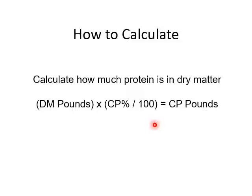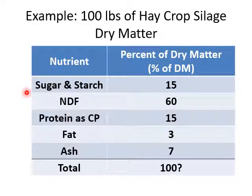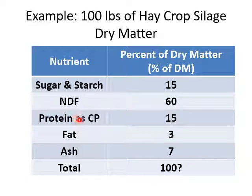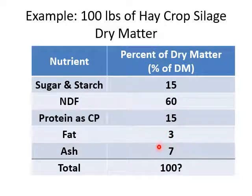Here we have an example of taking 100 pounds of hay crop silage dry matter and splitting it into: sugar and starch, NDF — these two are carbohydrates, the more available carbohydrate versus the cell wall — then crude protein (CP), fat, and ash to represent minerals. A typical hay crop silage might be 15% sugar and starch, 60% NDF, 15% crude protein, 3% fat, and 7% ash.